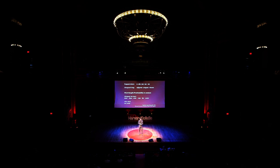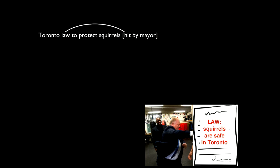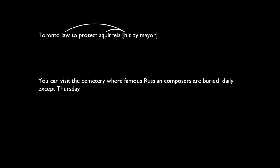Let's move on to syntax. Remember the headline: 'Toronto law to protect squirrels hit by mayor.' One interpretation is that he's attacking or criticizing the law. But the funny one is where he's hitting the squirrels. Why do we get that interpretation? It's because it's a local connection. Whenever you have very local connections between the dependencies of the words, it's very easy for the memory system to compute. Here's a bad translation from a Russian monument: 'You can visit the cemetery where famous Russian composers are buried daily except Thursday.' There's a local connection the writer did not intend, but you can't help but notice.